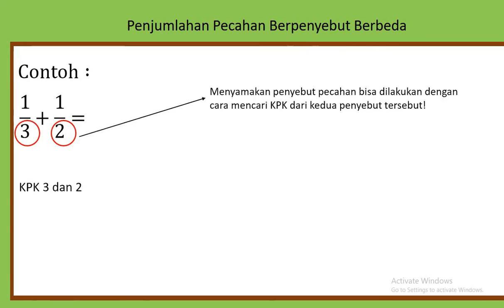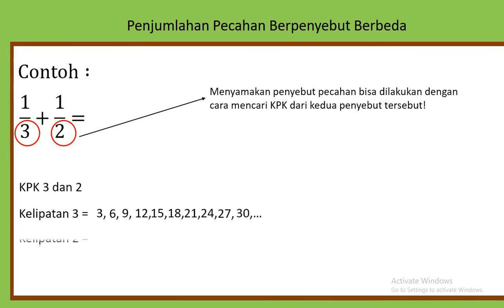Kelipatan 3 sama seperti tadi: 3, 6, 9, ... sampai 30. Kemudian kelipatan 2: ada 2, 4, 6. Sudah muncul angka yang sama antara kelipatan 3 dan 2, yang ibu lingkari merah. KPK dari 3 dan 2 adalah 6.